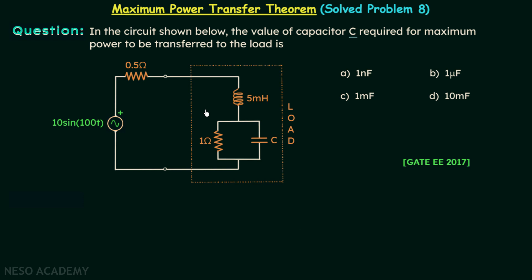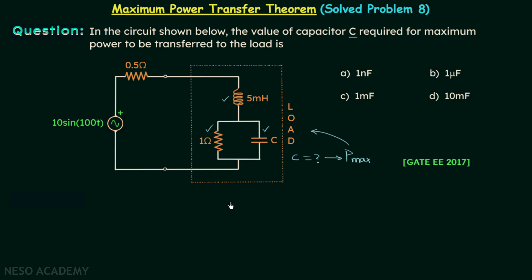When you observe the given network, you will find that the inductor, the resistor, and the capacitor together are forming the load of this network. We need to find the value of capacitor C for maximum average power transfer to the load. There are 4 options and we need to choose the correct one.